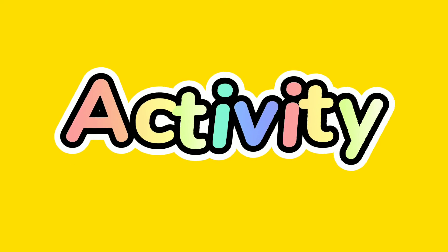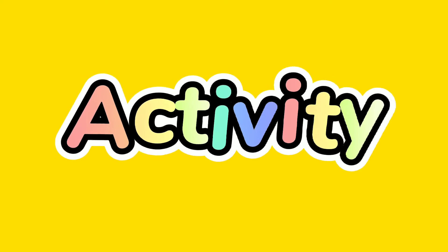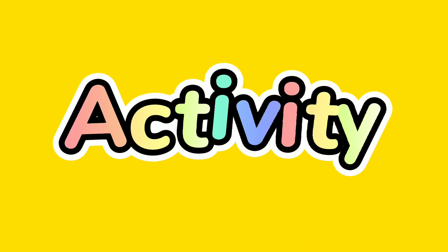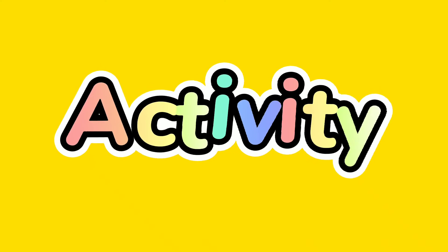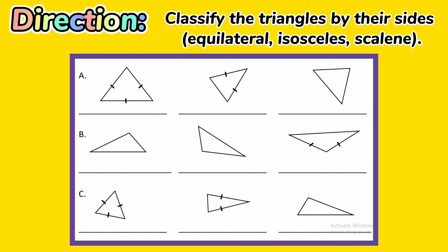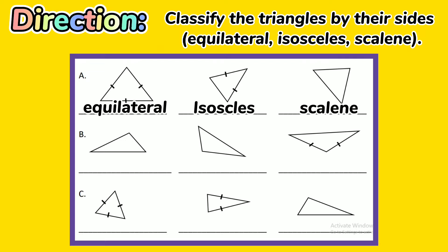Let's have an activity. You are going to answer the following carefully. Write your answer in your mathematics notebook. Classify the triangles by their sides: equilateral, isosceles, or scalene. Set A: the first one is equilateral triangle, the second is isosceles triangle, and the third is scalene triangle.